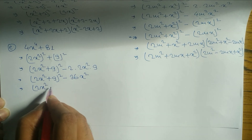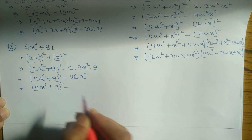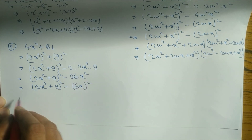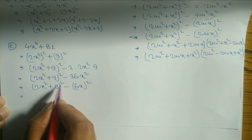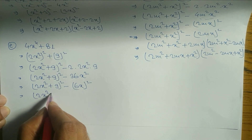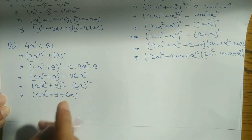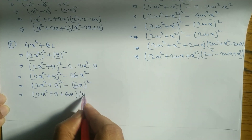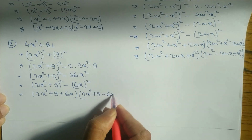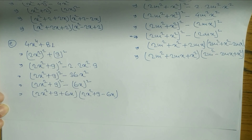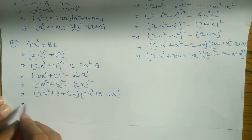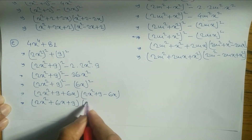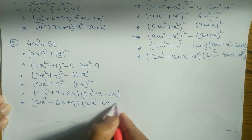Now we convert 36x² into a whole square: (6x)². So we have (2x² + 9)² − (6x)², which is in the form of a² − b². Applying (a + b)(a − b): (2x² + 9 + 6x)(2x² + 9 − 6x). Arranging: (2x² + 6x + 9)(2x² − 6x + 9). Hope you understand this.